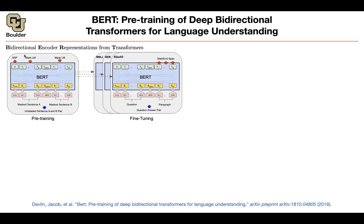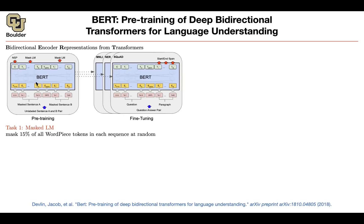The first change from before is that you're using the encoder part of a transformer — hence the name bidirectionality, because now you are not doing any masking. Each word can attend to all of the words in the future as well as the past. That's why it's bidirectional. The other change is the way you pre-train. Previously your task was predicting the next word. Now your task is to mask 15% of your word pieces for each sentence at random, and then predict the corresponding masked word. That's the masked language model task.